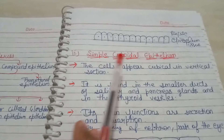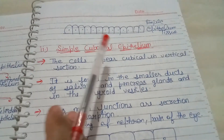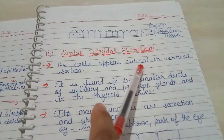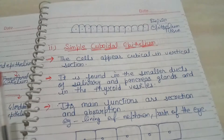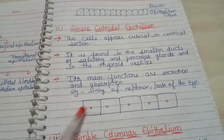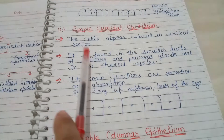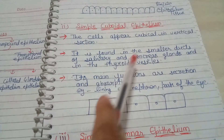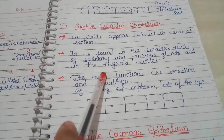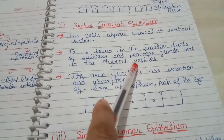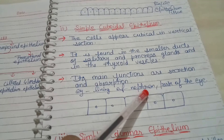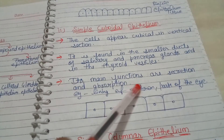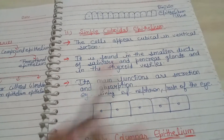Now we discuss about simple cuboidal epithelium tissue. The cells appear cubical in vertical section. It is found in the smaller ducts of salivary and pancreas glands, in the thyroid vesicles, lining of the nephron, and parts of the eye. Its main functions are secretion and absorption.